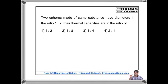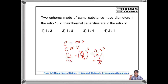In this problem, two spheres made of the same substance have diameters in the ratio 1:2. We have to find the ratio of their thermal capacities. We know that heat capacity C = M·S, where M is the mass and S is the specific heat. Since mass is proportional to volume, and volume is proportional to R³, we get C₁/C₂ = (R₁/R₂)³ = 1:8.